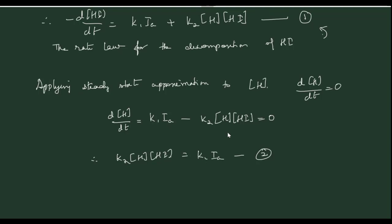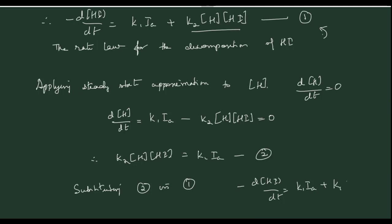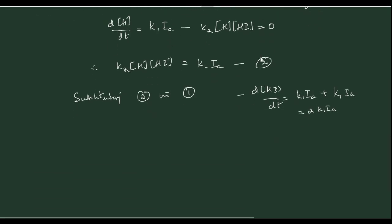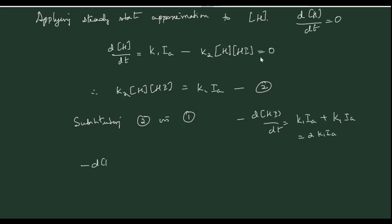Substituting equation 2 into equation 1, we get: −d[HI]/dt = K1 × Ia + K2 × [H] × [HI]. Since K2 × [H] × [HI] = K1 × Ia, we can write K1 × Ia in place of the second term. So −d[HI]/dt = K1 × Ia + K1 × Ia = 2 × K1 × Ia. This is equation 3.